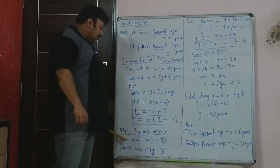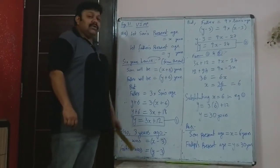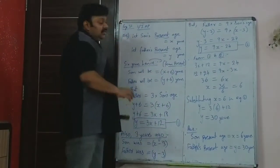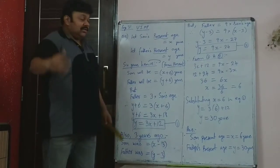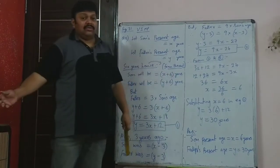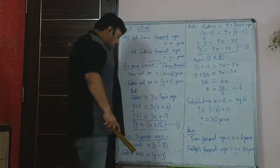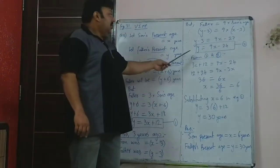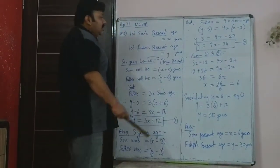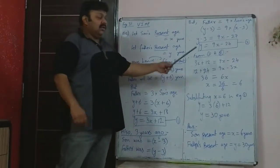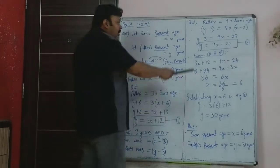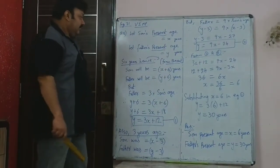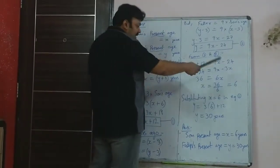The second condition: 3 years ago, the son's age was x minus 3 and the father's age was y minus 3. The father was 9 times the son's age 3 years ago: y minus 3 equals 9 times (x minus 3), giving y equals 9x minus 24 (equation 2). Using the substitution method — both expressions equal y — so 3x plus 12 equals 9x minus 24.